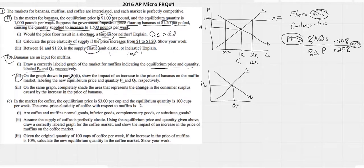On the graph drawn in part B, show the impact of an increase in the price of bananas on the muffin market. So, bananas, they tell us, are an input for muffins.